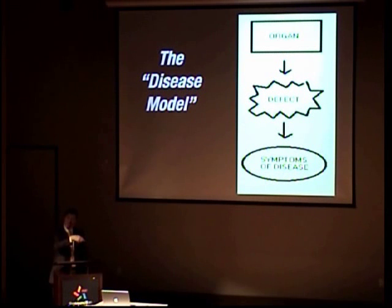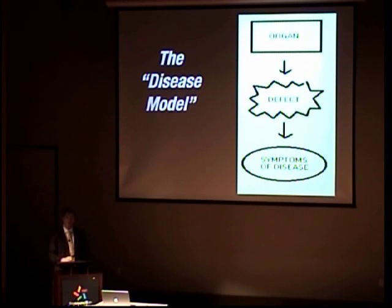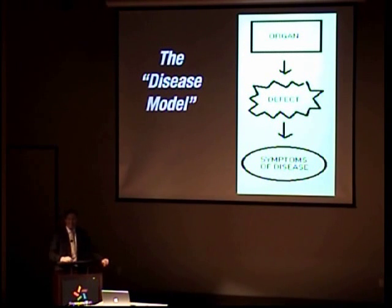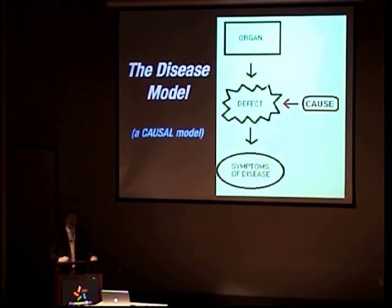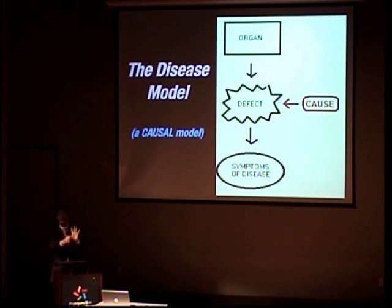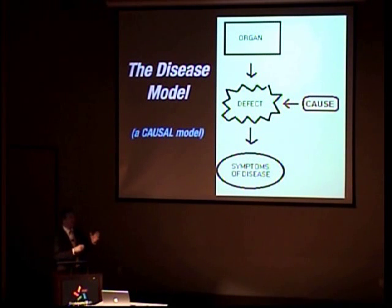That little schematic — organ, defect, symptoms — is everything that we do in Western medicine. I've just put all of Western medicine on the board. It's a causal model. The power of the disease model was to get rid of all those bad explanations of disease: personality, what mommy did, race, gender, possession by demons. This model got rid of all of that and got us to the actual cause — and it was a very, very powerful model.